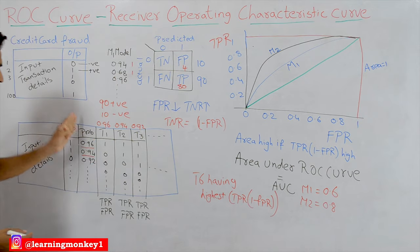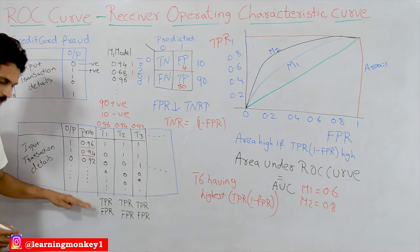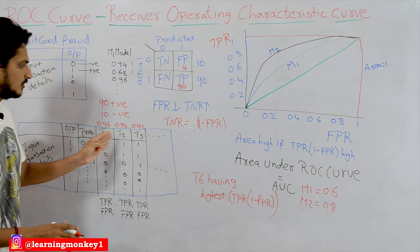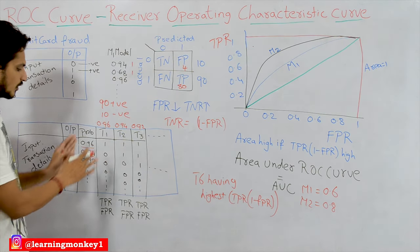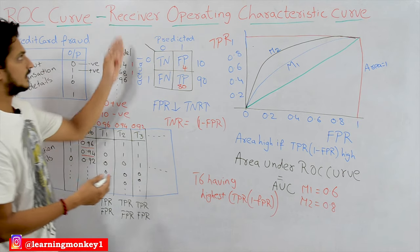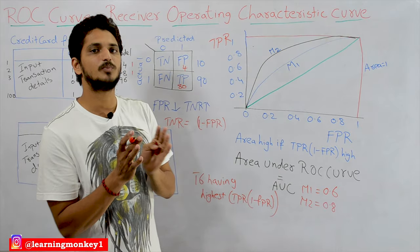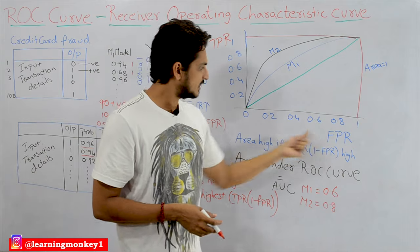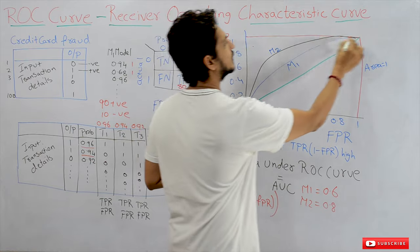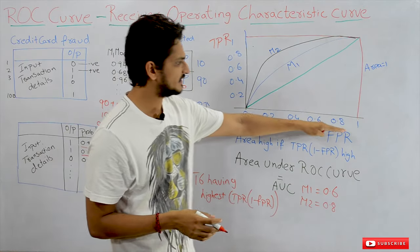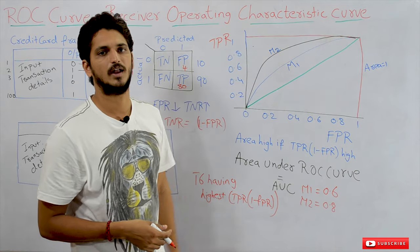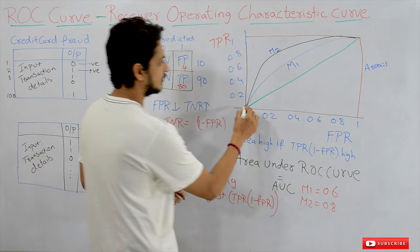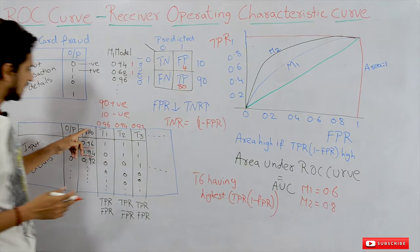Do this for all probability values — take the fourth, fifth, sixth, until all 100 points. Calculate TPR and FPR for all threshold values. Then plot these TPR and FPR values. Our Receiver Operating Characteristics curve is based on FPR on the x-axis and TPR on the y-axis. The FPR value is between 0 and 1, the TPR value is between 0 and 1, so the total area is 1 (length 1 × breadth 1). Plot all FPR and TPR values for all threshold values and we get a curve — this blue line is the curve for M1 model.